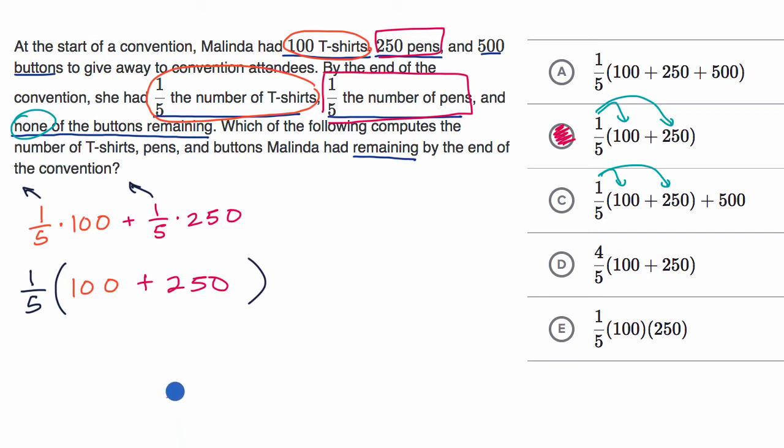Now we could have gone the other way around. We could have started with the choices. We could have said, look, choice A has one-fifth times the sum of our original number of T-shirts, pens, and buttons. And that would have been accurate if we were left with one-fifth the number of T-shirts, one-fifth the number of pens, and one-fifth the number of buttons.